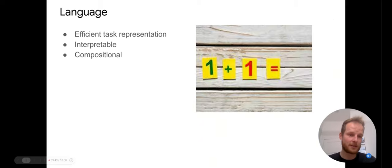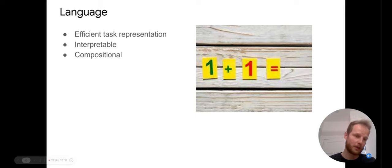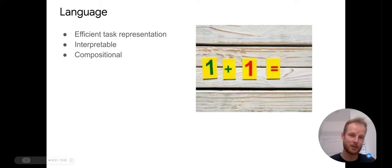Thirdly, language has the nice property of being compositional. If we train our robots to do different tasks we can compose them together, either by appending one task to another — putting a comma and asking the robot to do something right afterwards — or by combining them in all kinds of different ways that language allows us to do.